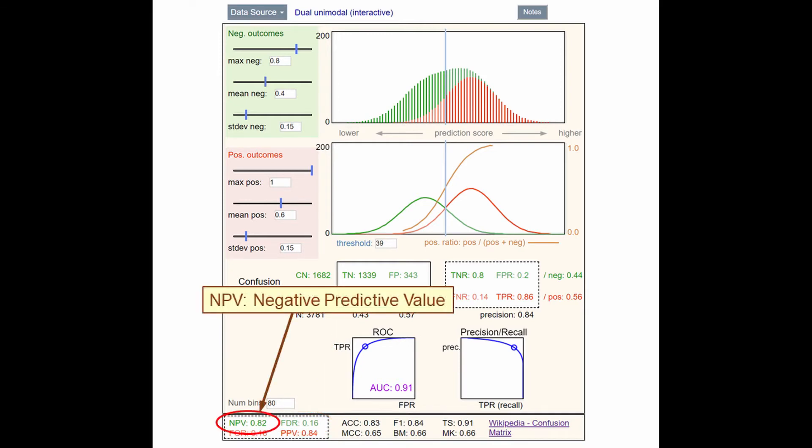Similarly, negative predictive value is the proportion of green falling to the left of the threshold, and false omission rate is the proportion of red falling to the left of the threshold. This tells of the samples that we predicted to be negative because they are on the left of the threshold, what fraction actually were positive.